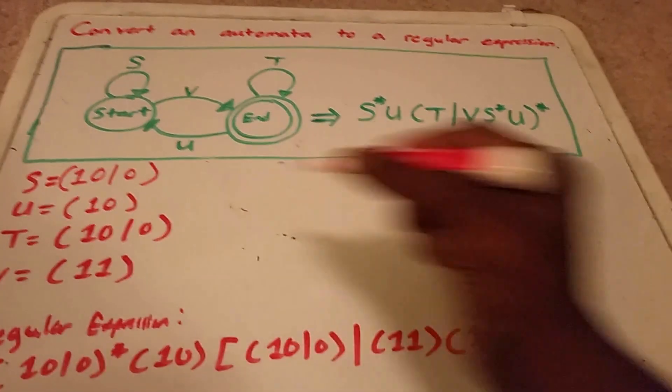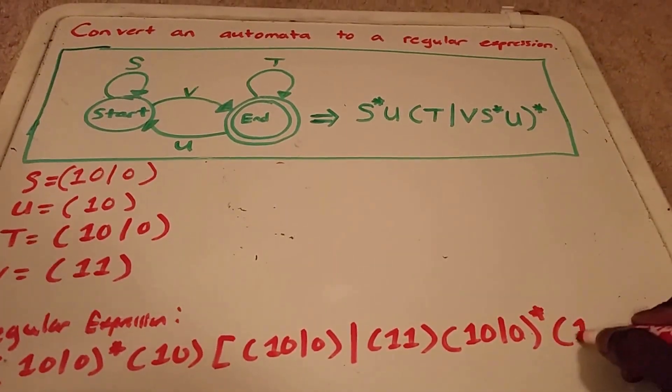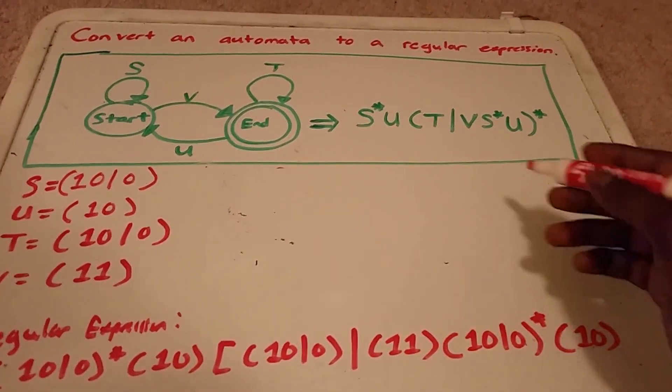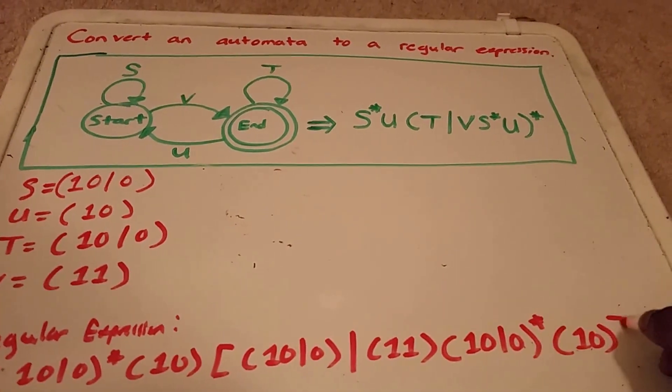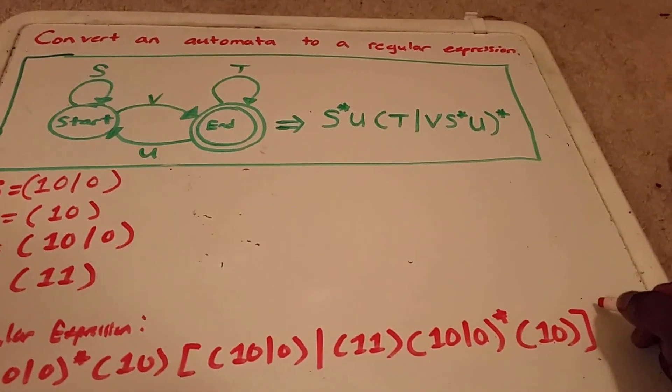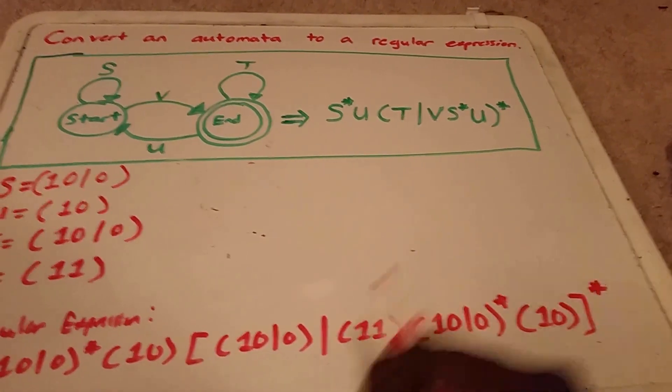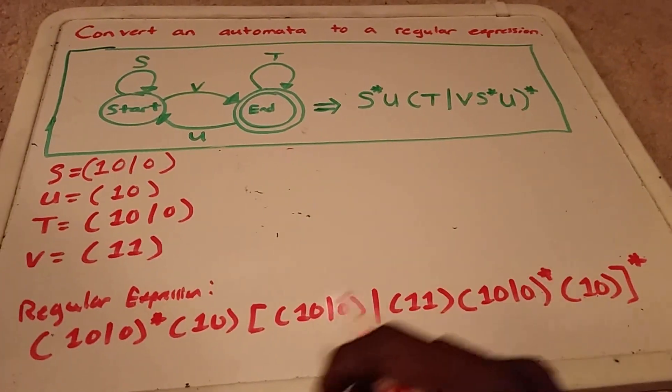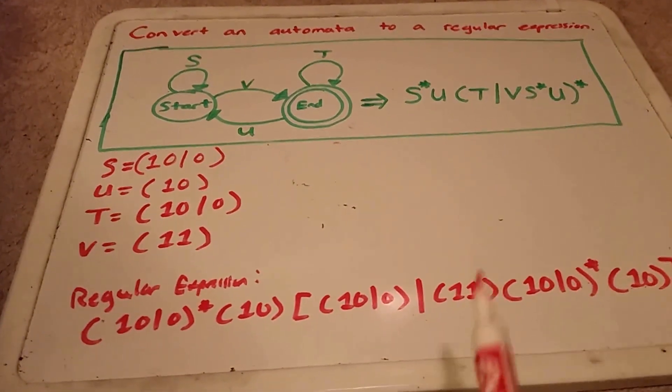Then we have our U, which is one, zero. And then, all of this is still within that bracket there, with a star at the end. And this is our regular expression.